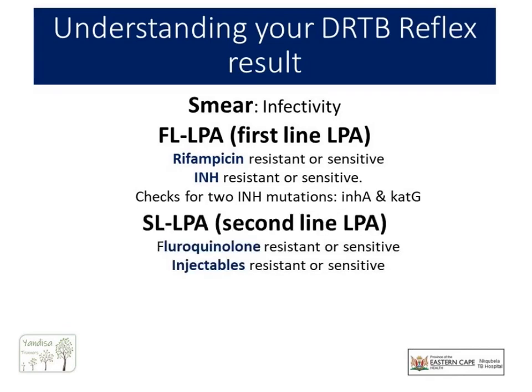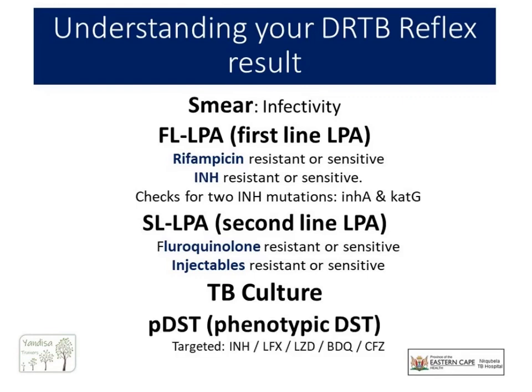Thirdly, a second-line line-probe assay, which will check both fluoroquinolone and injectable susceptibility. And fourthly, a TB culture — the only test that confirms the presence of live bacilli. And lastly, a phenotypic DST, where the laboratory will do targeted testing depending on the LPA results. For example, if the first-line LPA showed INH susceptibility, the lab will double-check the INH sensitivity on a phenotypic DST.